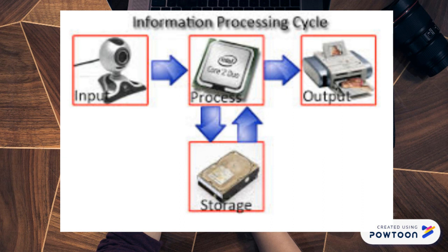We're looking at it in terms of those four keywords. If you look at the diagram in front of you, notice that input comes first, and then we have an arrow leading to processing, then an arrow leading to output, and then an arrow from processing up and down to storage.